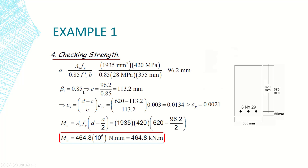Using the factor β₁, which equals 0.85 for f'c ≤ 28 MPa, I find the neutral axis depth c = a / β₁. Knowing c, I use strain compatibility to determine the steel strain: ε_s = (d − c) / c × ε_cu, where ε_cu = 0.003.